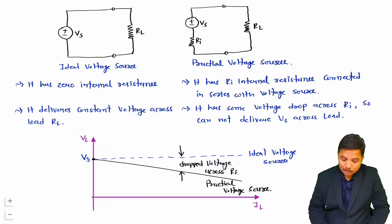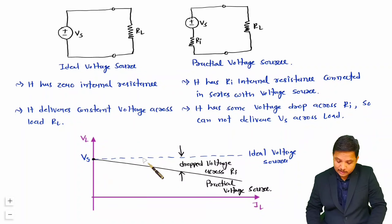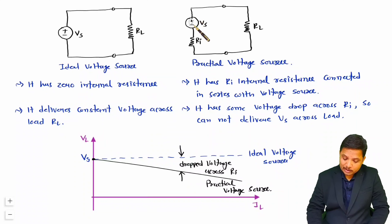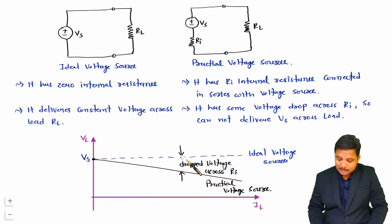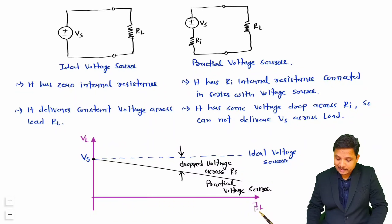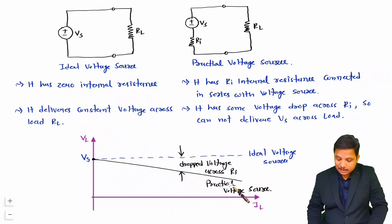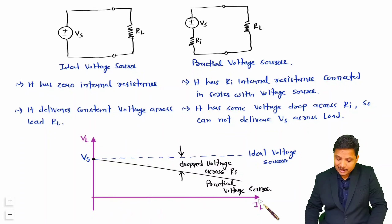An ideal voltage source has no internal resistance, so it delivers constant voltage at the load. A practical voltage source has internal resistance Ri, causing a voltage drop across Ri. As current increases, that voltage drop across Ri increases, so less voltage is delivered across the load. From the graph, you can see voltage decreases as load current IL increases.